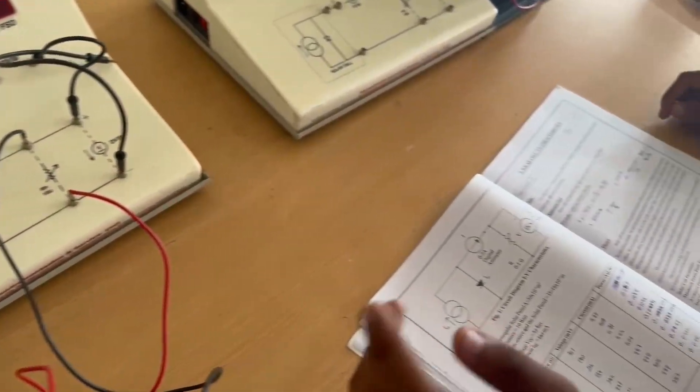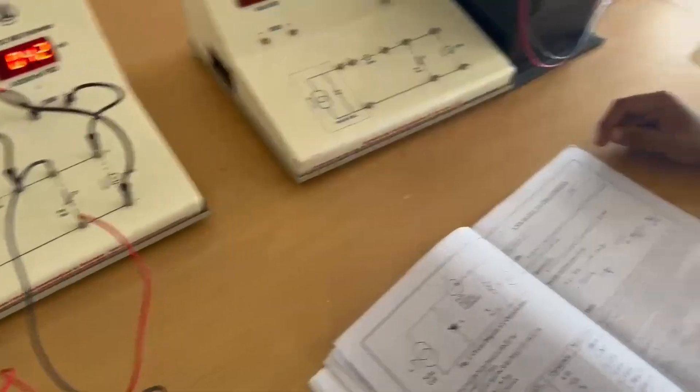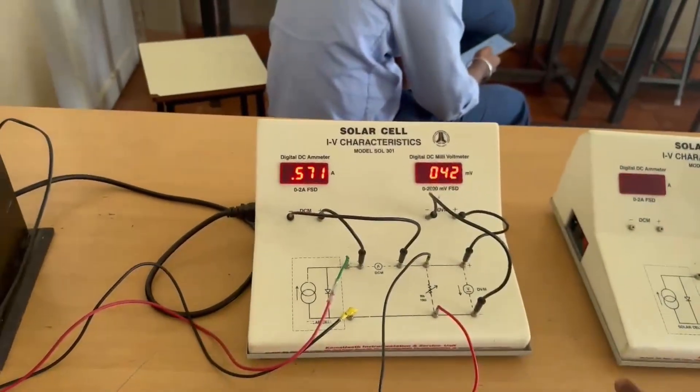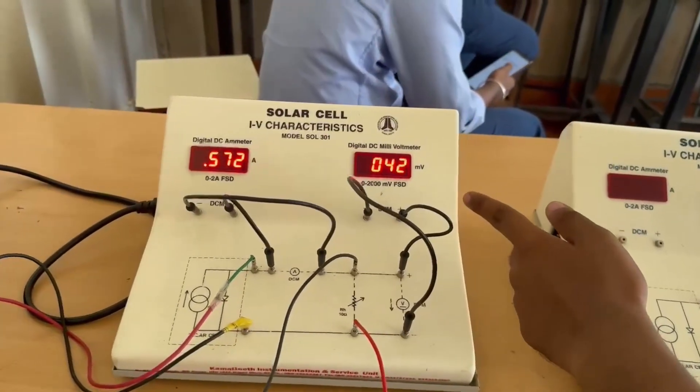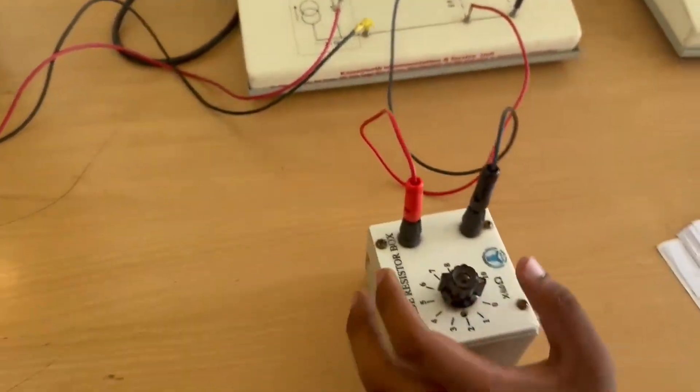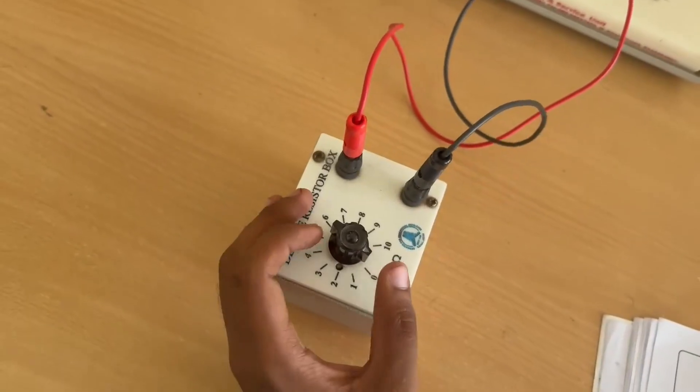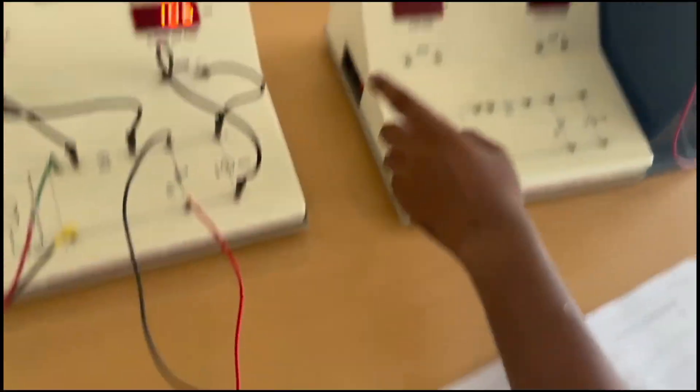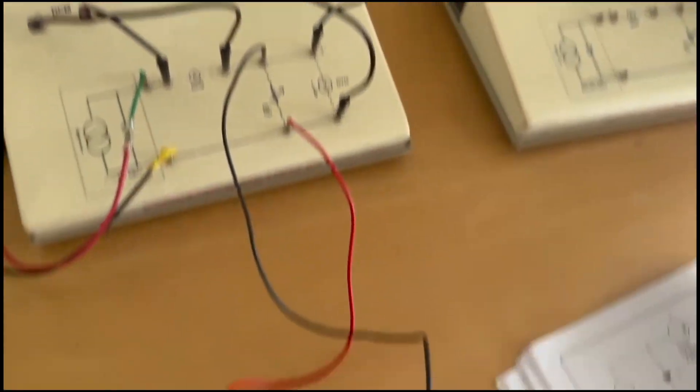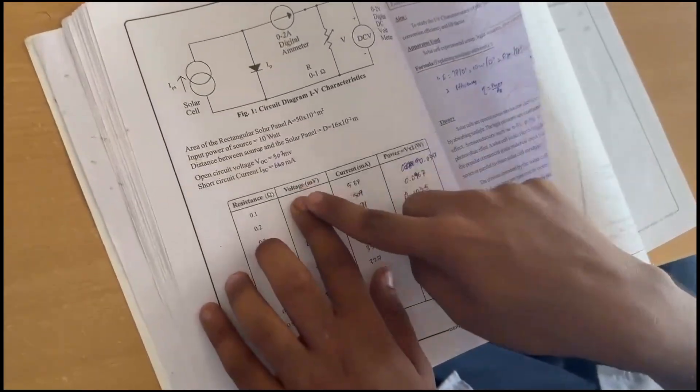Once the connections are done, fix the apparatus in place. The initial value is very small, like 42 millivolts. Set the resistance to 0.1 ohms. You get the value as 106 millivolts and note that in the first column.